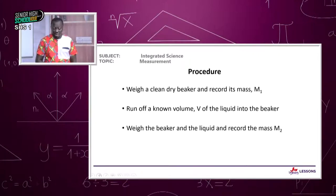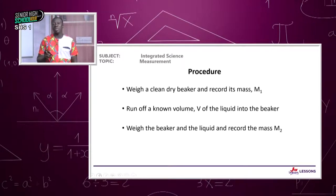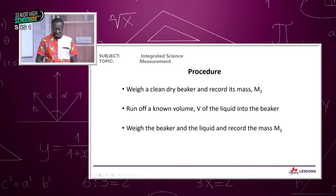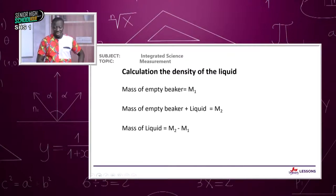When done measuring the beaker, take the liquid in question and run off a known volume into the beaker using a burette. You close the regulator so you don't have excess volume, then do re-weighing. You determine the mass of the empty beaker M1, then the mass of the beaker plus the liquid M2. We have M1, M2, and V of the liquid.